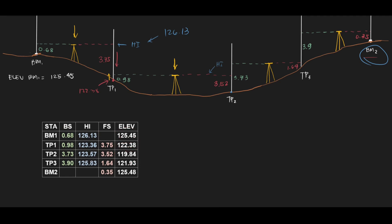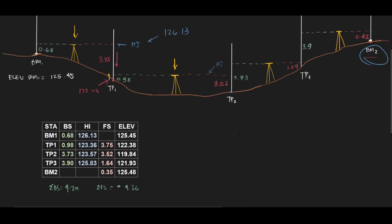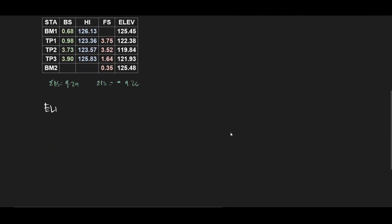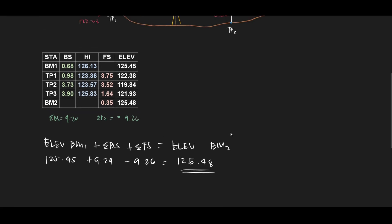After doing all those calculations, it's good to do an arithmetic check. For the arithmetic check, you get the summation of the backsights, which equals 9.29, and then the summation of the foresights, which equals 9.26. We put a negative sign on the foresights because as you can see in the figure, we always subtracted the foresights to get the elevations of the turning points. So if you take the elevation of BM1 and add the summation of backsights then subtract the summation of foresights, you should get the elevation of BM2. So 125.45 plus 9.29 minus 9.26 should equal 125.48. If you got that correctly, it means you did the arithmetic correctly. Note that this is only an arithmetic check.